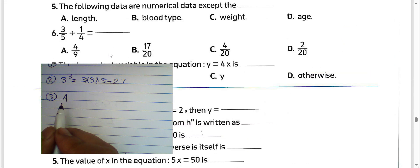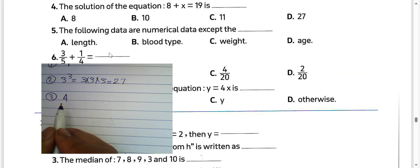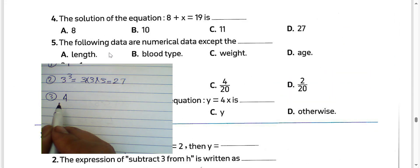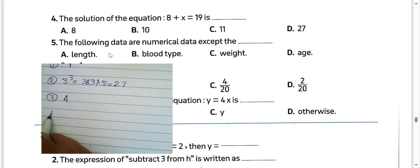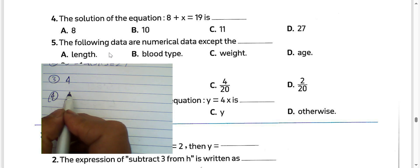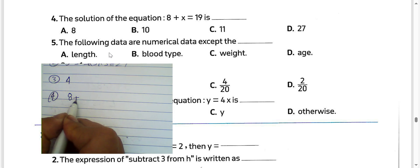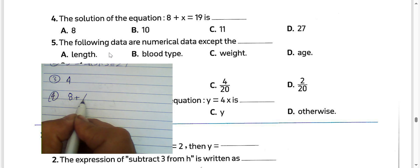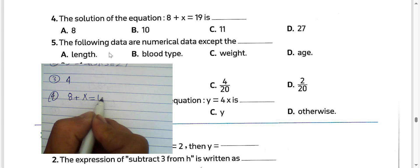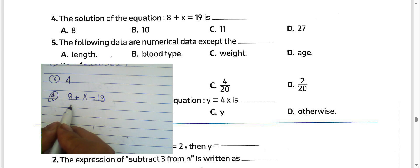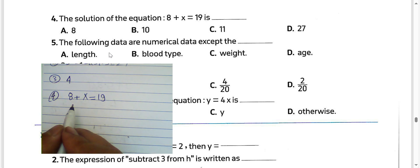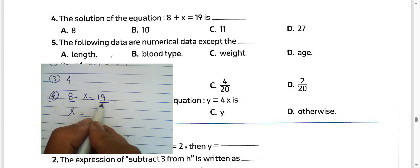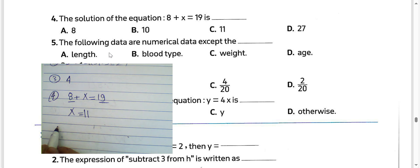Next question, number 4: the solution set of the equation 8 plus x equals 19. We can find the value of x by finding the difference between the two numbers: 19 minus 8, which will be 11.